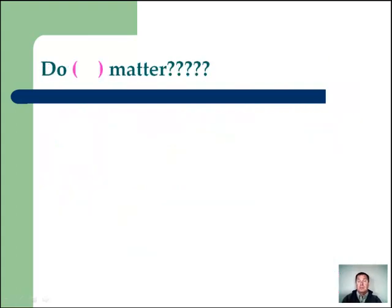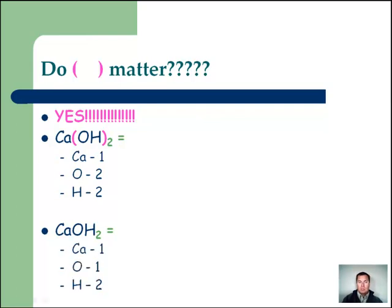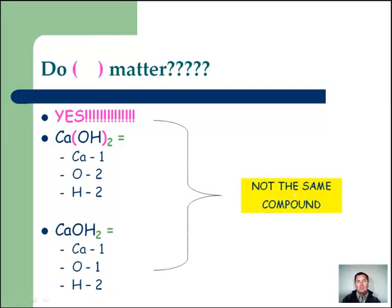Here's why parentheses matter — let's look at our two versions of calcium hydroxide. In the correct version, the two is distributed to everything inside the parentheses: one calcium, two oxygens, and two hydrogens. Without parentheses, you'd have one calcium, one oxygen, and two hydrogens — a completely different compound with a different ratio of atoms. Think about carbon dioxide versus carbon monoxide — different ratios mean completely different substances. So make sure you use parentheses.